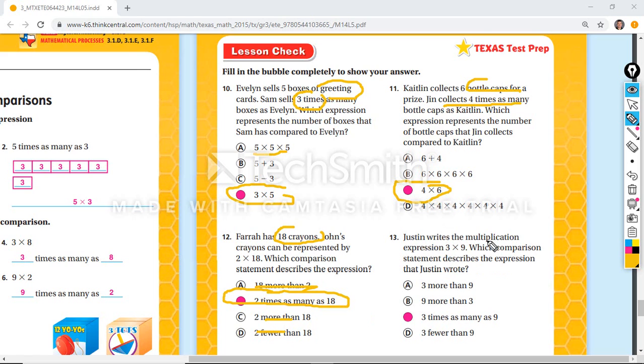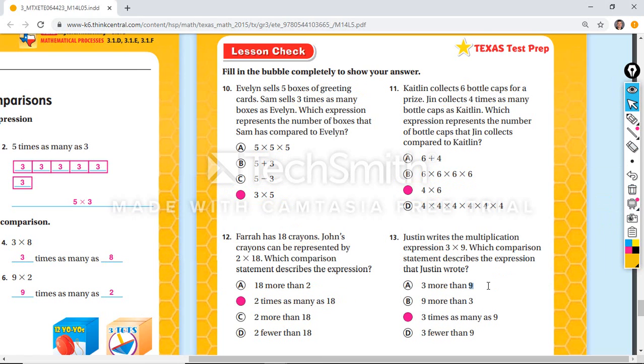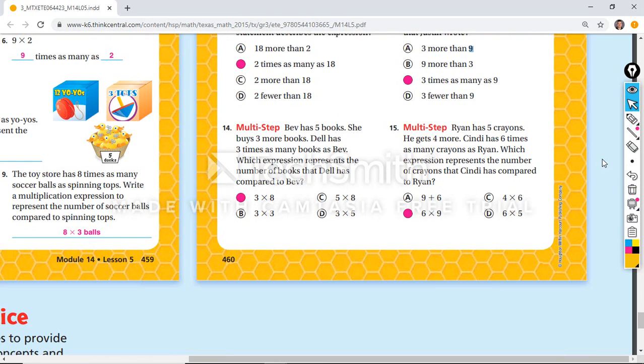Then the next one. Justin writes the multiplication expression three times nine. Which comparison statement describes the expression? Three times as many as nine. And again, more, more, and fewer are incorrect. You should already have found the pattern of what they're trying to do. More, more, and fewer.